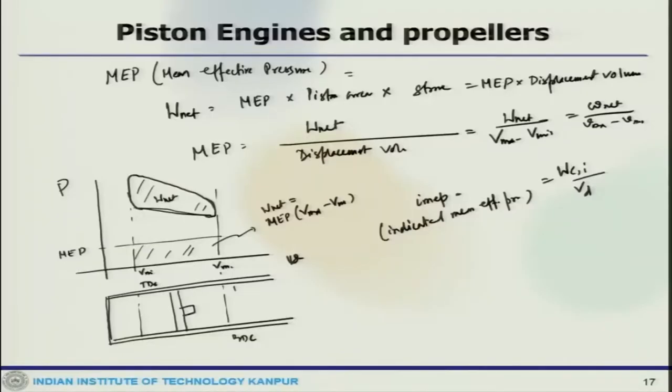Let us continue the discussion on this Otto cycle analysis. We have looked at the thermal efficiency and other things for the ideal cycle, and also talked about when the efficiency differs in the real cycle. Now, we are discussing the mean effective pressure. IMEP can be defined as W_CI by V_D, and one can write P_I N_R by N V_D.